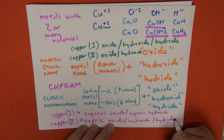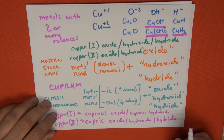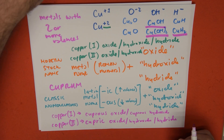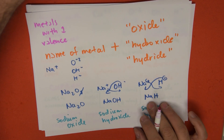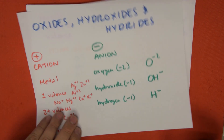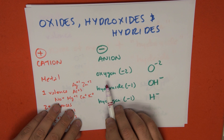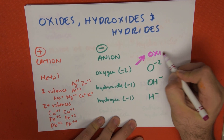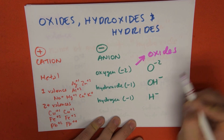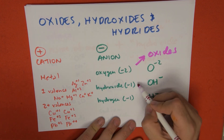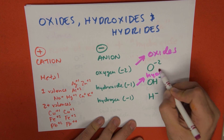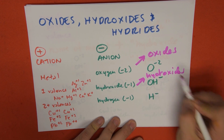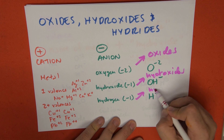That's basically the naming system for these families. All you have to do is identify what anion we're dealing with: if it's oxygen, it's an oxide; if it's hydroxide, it's a hydroxide; and if it's hydrogen, it's a hydride.